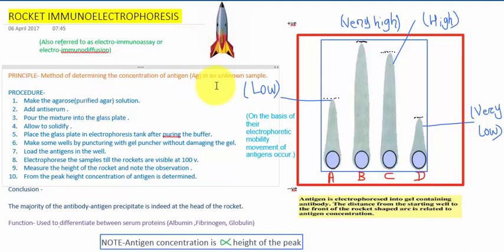Let's discuss the procedure. First, you need to make the agarose, that is the purified agar solution. Then you need to add the antiserum over it. Then you need to pour the whole mixture into a glass plate. Pour the whole solution which contains the agar solution with the antiserum and allow them to solidify.